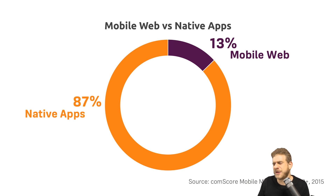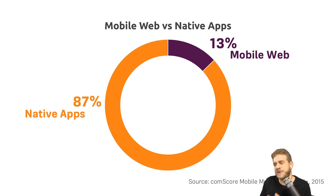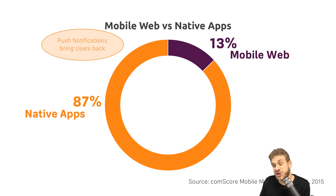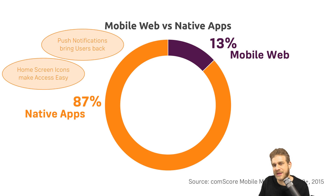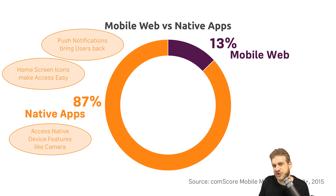Well, that looks pretty bad for web apps, doesn't it? Let's have a look at why it looks like this. Mobile apps have push notifications that draw users into them. We have home screen icons which make it easier to interact with them than with web pages. We can access native device features like the camera, and they possibly work offline.